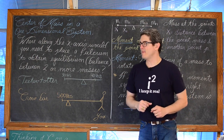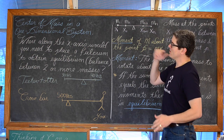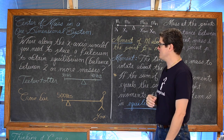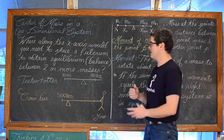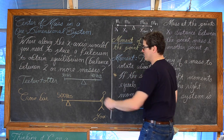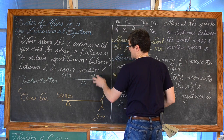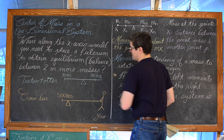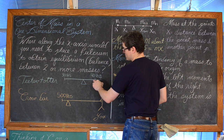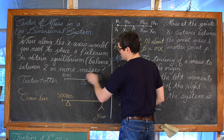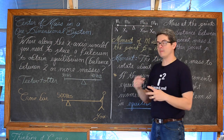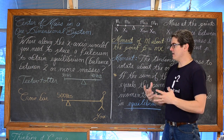The center of mass of a one-dimensional system: where along the x-axis would you need to place a fulcrum to obtain equilibrium between two or more masses? Think of the teeter-totter. If one child weighs 30 pounds and another weighs 40 pounds, the 40-pound child would have to be closer to the fulcrum for the one-dimensional system to be in equilibrium.